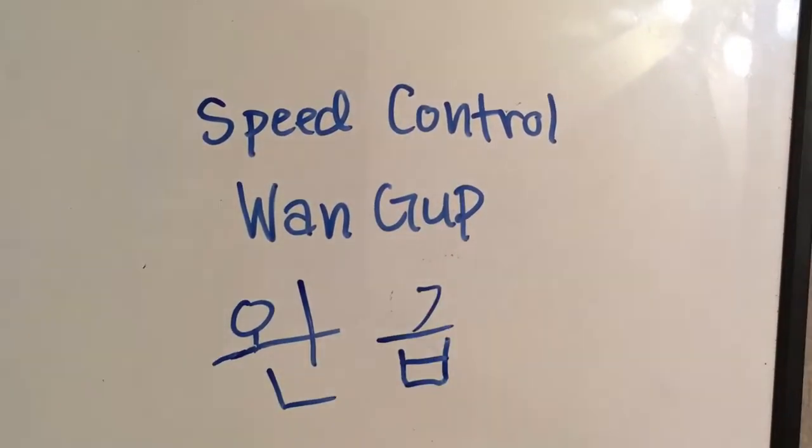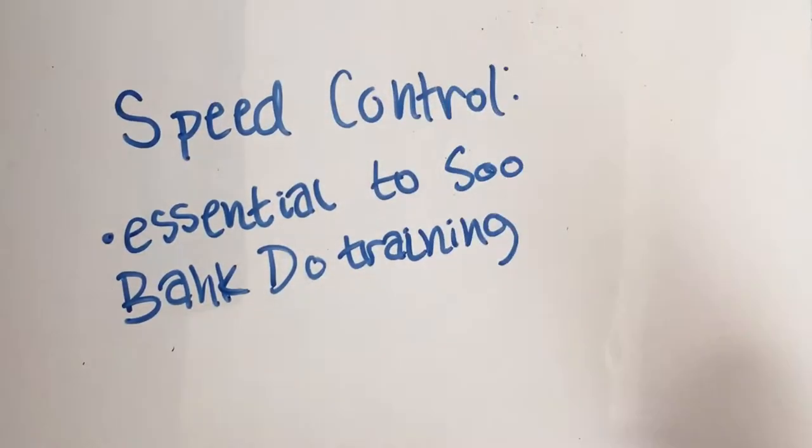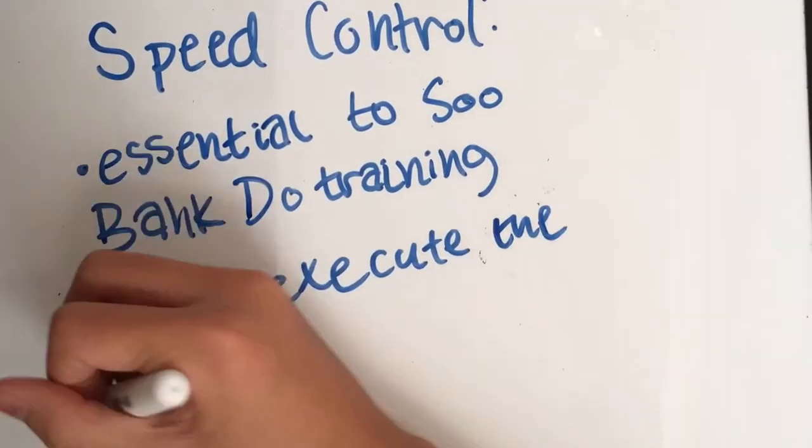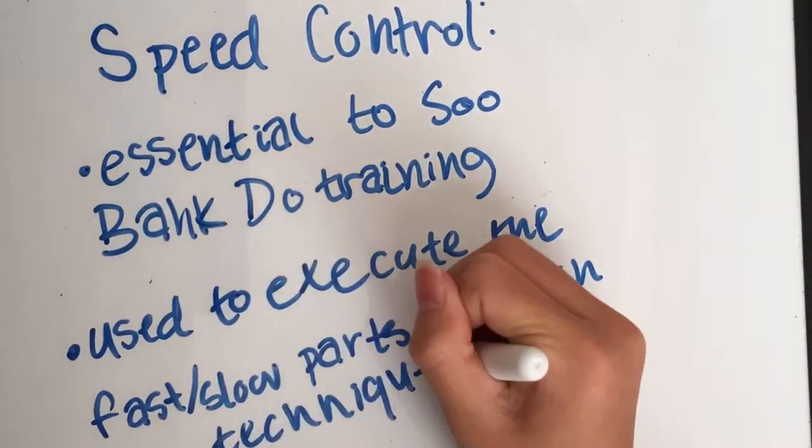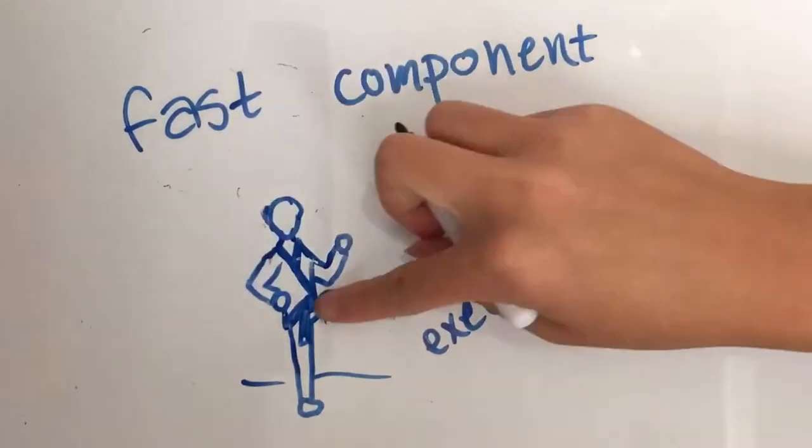speed control, Wanga. Speed control is essential to Tsubak-do technique, because in every technique there is a fast and slow component. The slow component is usually involved in the preparation, and the fast is usually the execution.